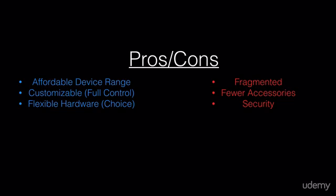Getting down to the cons: first, it is fragmented. Not one version of Android is the same. While you may understand how to use one Android phone or device, it may be different on another. Different manufacturers add their own skins on top of Android, which gets confusing. Number two, there are fewer accessories — cases and external hardware — simply because there are so many different Android devices unlike iPhone, which usually has one specific model per year. And last but not least, security is something to consider. There is statistically way more malware and viruses available on Android because it's a more open playing field with a bigger global market share, making it a bigger target for security risks, hacks, and bugs.